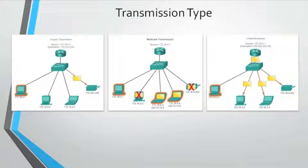Broadcast is the process of sending a packet from one host to all hosts on the network. It is used for communication limited to hosts on the local network. Broadcast packets always use a destination IPv4 address of 255.255.255.255. Routers do not forward unlimited broadcasts. For this reason, an IPv4 network is also referred to as a broadcast domain; routers form the boundary for broadcast domains.